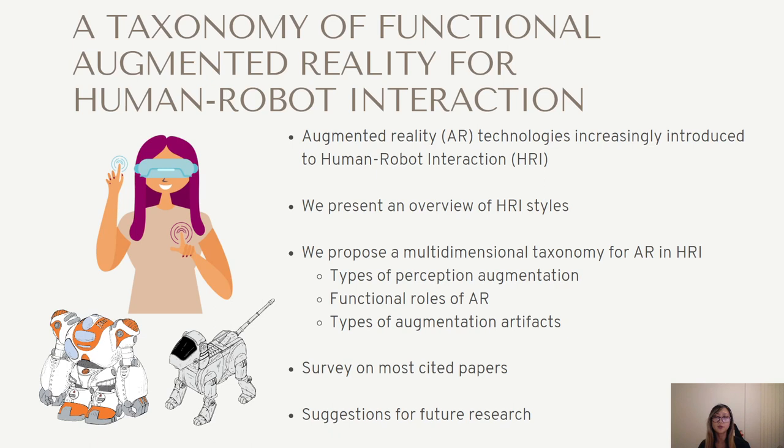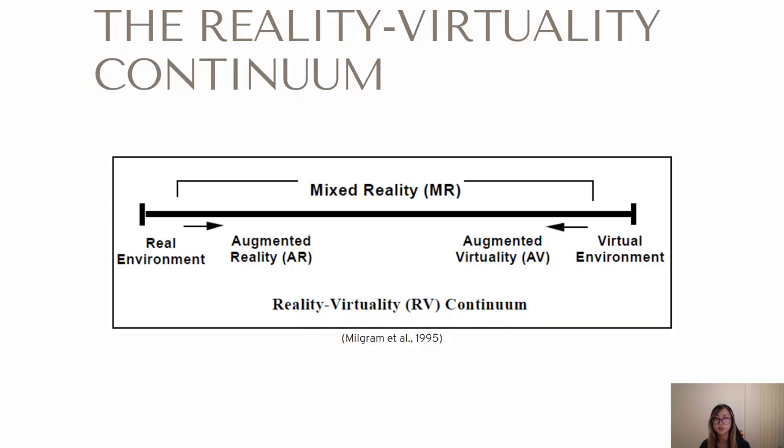Here, we present an overview of HRI styles, including how AR comes into play, and we propose a multi-dimensional taxonomy for AR and HRI that distinguishes the type of perception augmentation, the functional role of AR, and the augmentation artifact type. We place sample publications within the taxonomy to demonstrate its utility. Lastly, we derive from the taxonomy some research gaps in current AR for HRI research, and provide suggestions for exploration beyond the current state of the art.